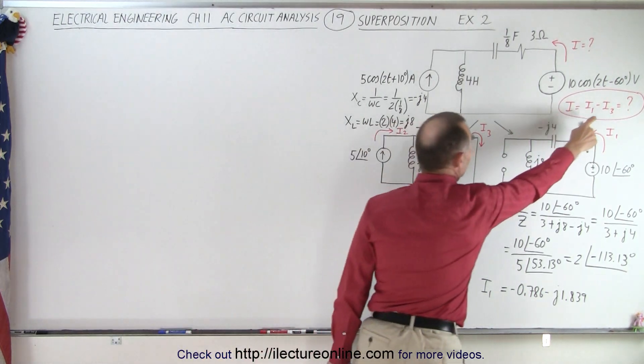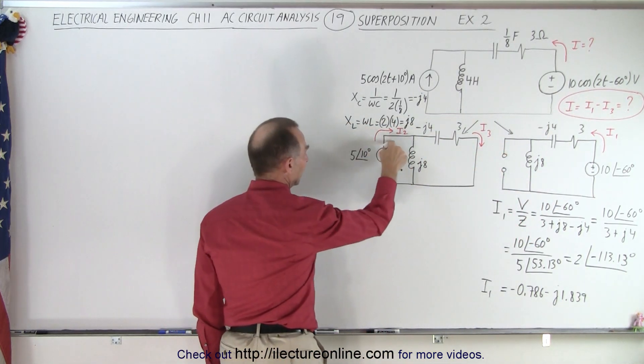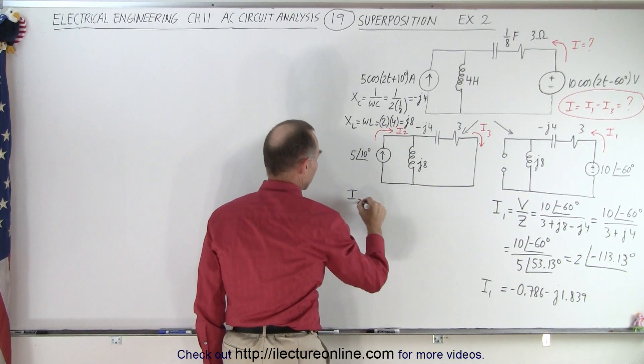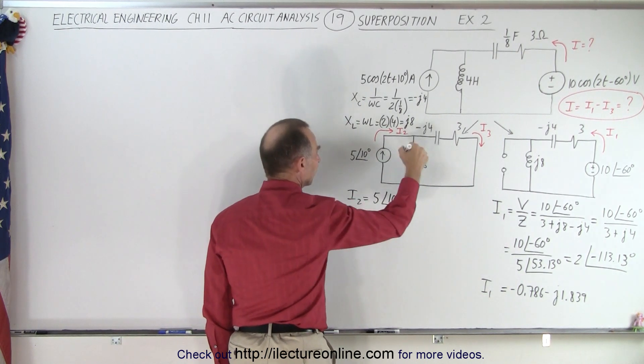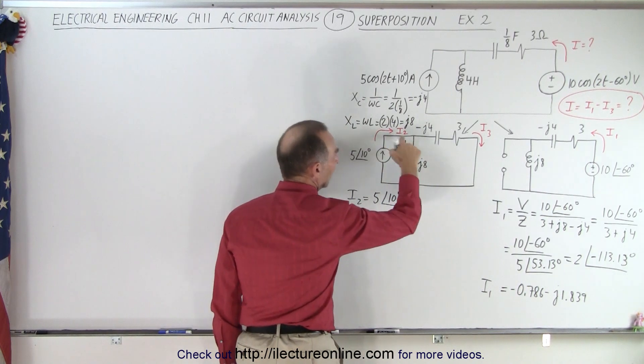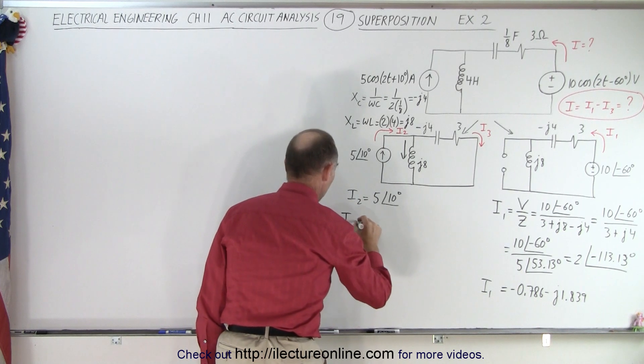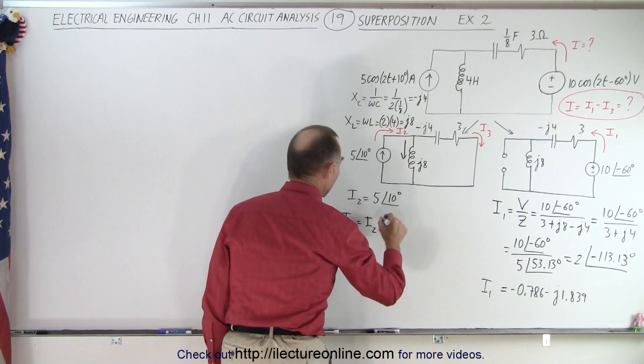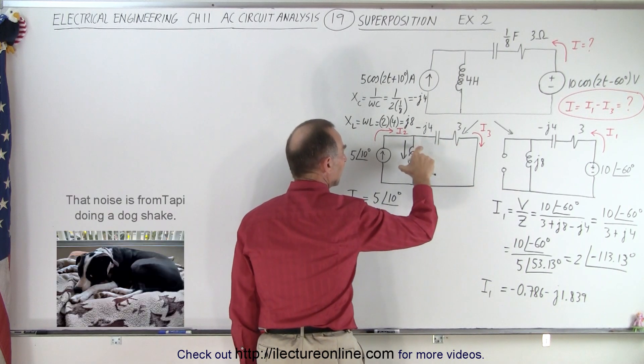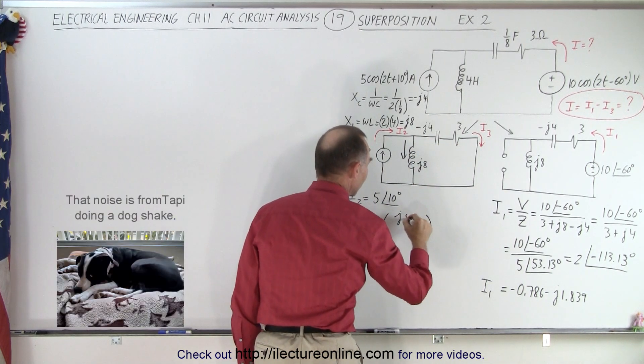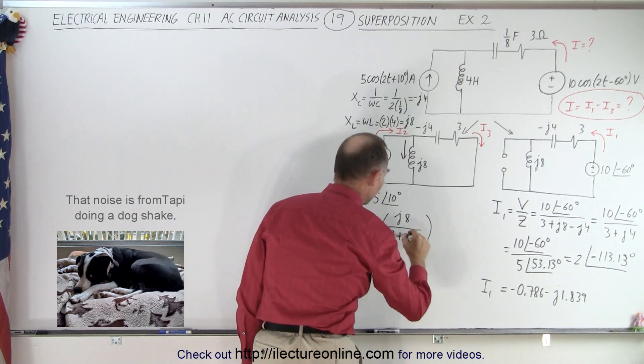Now we still need to find current I3. We come over here, and we say I3 equals the current source of 5 with a phase angle of 10 degrees. It's going to divide into a current in this direction and a current in this direction, I3. To find I3, we take I2 and multiply times the impedance in the other branch, which is J8, divided by the total impedance, which is 3 plus J4.